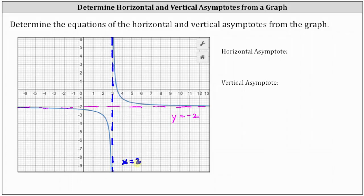If we select any point on this vertical line, the x-coordinate will always be three. For example, here we have three comma zero, three comma one, three comma two, and so on. To record the information: the equation of the horizontal asymptote is y equals negative two, and the equation of the vertical asymptote is x equals three.